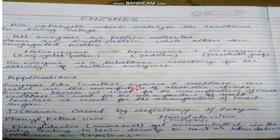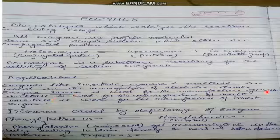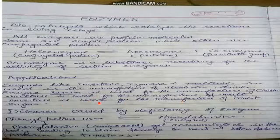Enzymes like invertase, zymase, and maltase are used in the manufacture of alcoholic drinks. The enzyme rennin is used in the manufacture of cheese. Maltase is used for the manufacture of malt, which is a basic component of health drinks. Invertase is used for the manufacture of invert sugar, which is a mixture of glucose and fructose.